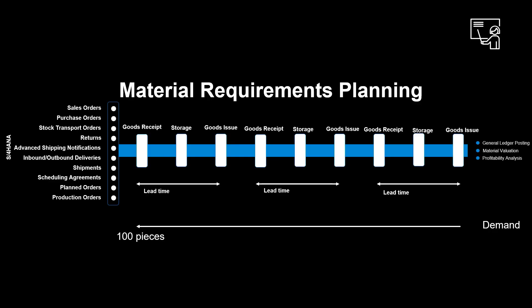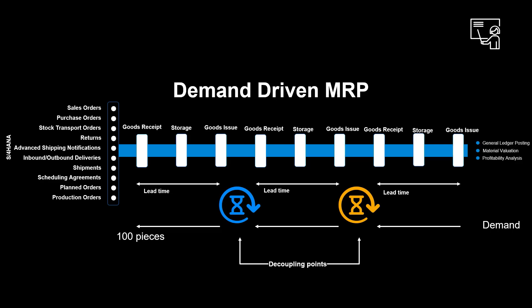Classic MRP calculates the lead time and requirements of all BOM levels. The time it will take to produce something will be the sum of the lead times. The idea of demand-driven MRP is for planning to use actual demand as the only trigger for production. It uses strategically placed buffers. These buffers and decoupling points will minimize the variability in the process, as the buffers will be able to absorb the shocks which most supply chains deal with daily.